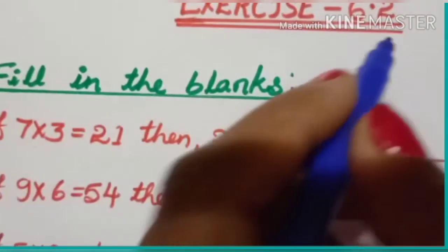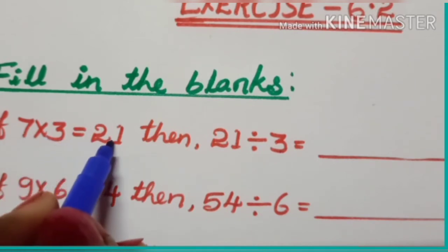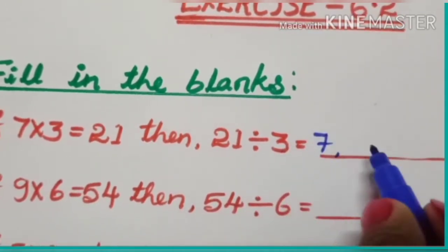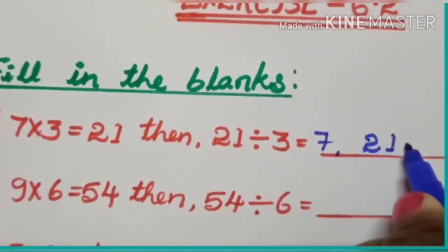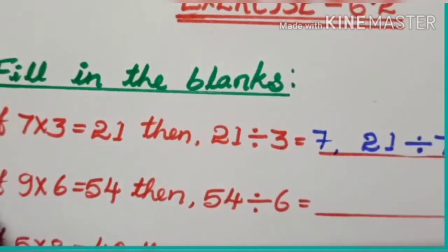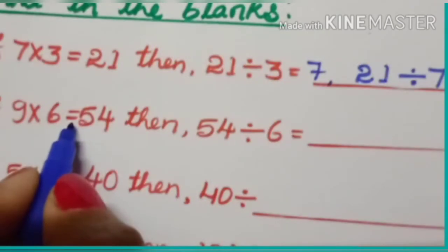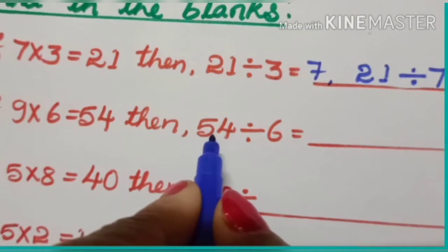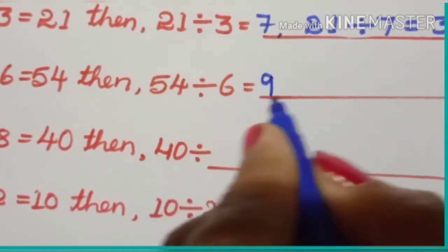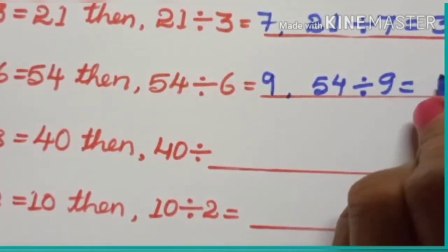Children, let us solve exercise 6.2. First, fill in the blanks. First question: if 7 multiplied by 3 is equal to 21, then 21 divided by 3 is 7, and 21 divided by 7 is equal to 3. Second question: if 9 multiplied by 6 is equal to 54, then 54 divided by 6 is equal to 9, and 54 divided by 9 is equal to 6.